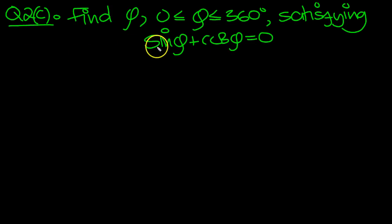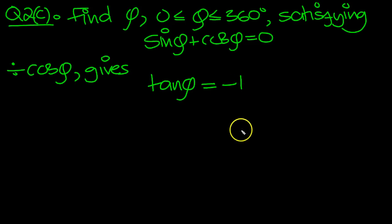If we divide by cos phi, then we'll get an equation in tan. Divide by cos phi gives sine over cos, which is tan phi. Now if I divide by cos, I'll get plus 1, and I can move that over at the same time to be minus 1. So tan phi equals minus 1.